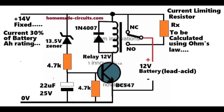The NO contacts of the relay can be seen configured with a current limiter stage which consists of a high watt resistor, whose value determines the amount of current that needs to be reduced for the last phase of the charging process.